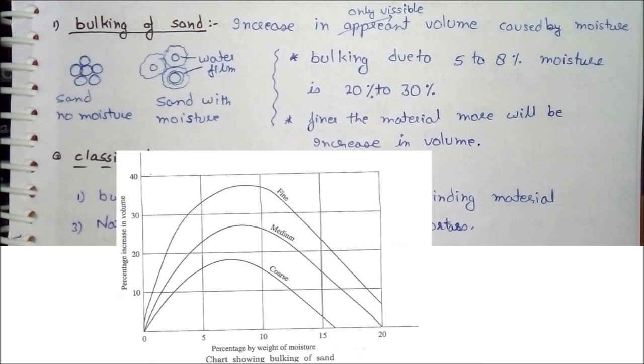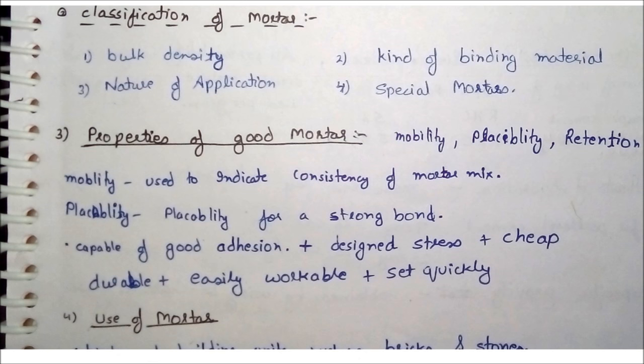Next is classification of mortar. Mortar is classified on the basis of bulk density, the kind of binding material used, the nature of application, and various types of special mortar — such as rapid hardening mortars or sulfate resistant mortars, according to the cement used.